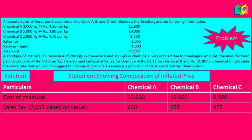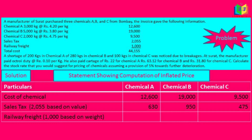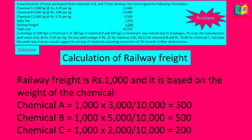Next we calculate the railway freight, which is allocated based on the weight of each chemical. Chemical A weighs 3,000 kg, B weighs 5,000 kg, and C weighs 2,000 kg, giving a total weight of 10,000 kg. Freight for A = (3,000 / 10,000) × 1,000 = Rs 300. For B = (5,000 / 10,000) × 1,000 = Rs 500. For C = (2,000 / 10,000) × 1,000 = Rs 200.